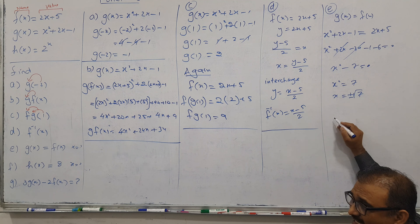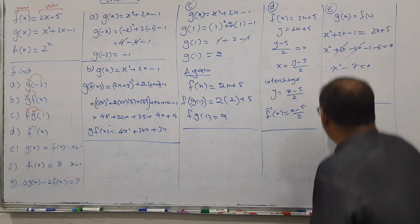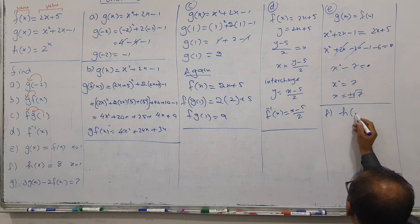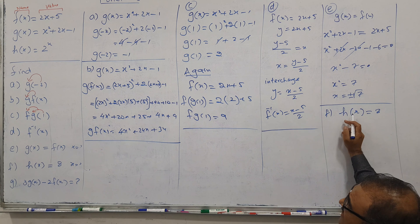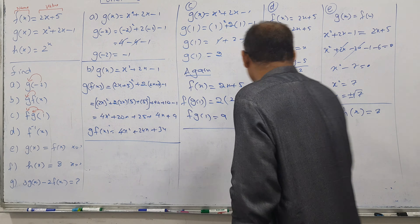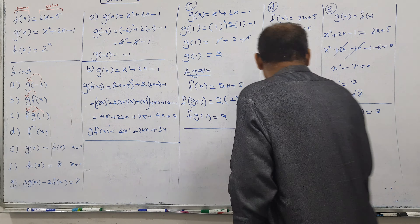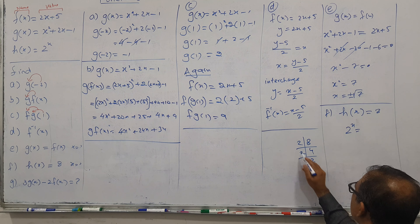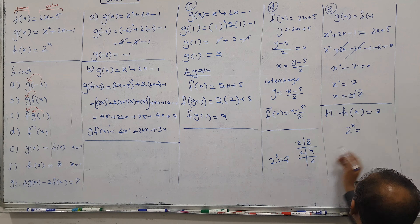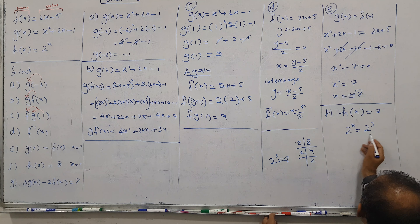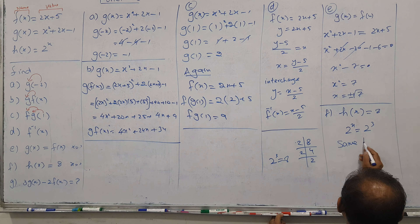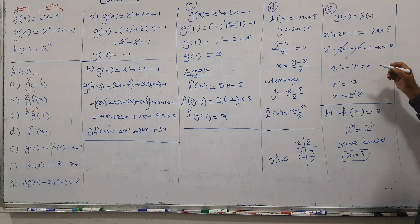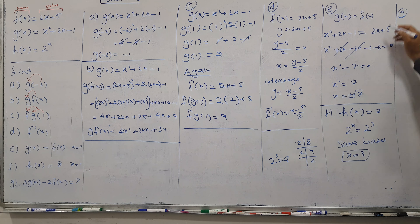Part F: H of X equals 8. Since H of X is 2 to the power X, substitute: 2 to the power X equals 8. We know that 8 equals 2 cubed, so we write 2 to the power X equals 2 to the power 3. Since the bases are the same, we equate the powers, giving X equals 3. Simple answer.